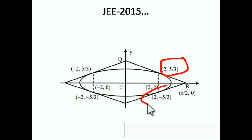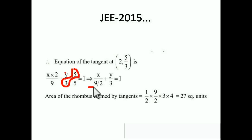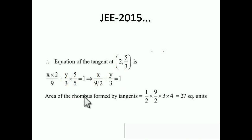Another endpoint is (2, −5/3), and similarly for the other two. Now we find the tangent through the point (2, 5/3). The equation of the tangent to the ellipse at (x₁, y₁) is: x·x₁/a² + y·y₁/b² = 1. Substituting x₁ = 2, y₁ = 5/3, a² = 9, b² = 5, the equation of the tangent becomes x/(9/2) + y/3 = 1.